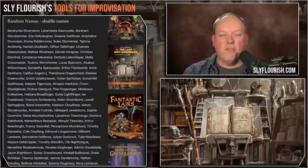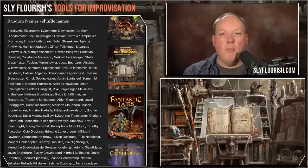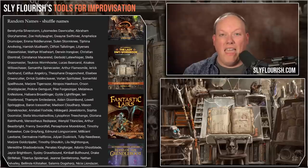Every time I talk to dungeon masters about the tools they use the most to improvise during their game, a list of names is the number one tool on that list. Almost every DM has a list of names that they keep in front of them during their game so that anytime they need to improvise a monster's name or an NPC name, they have a name ready to go.